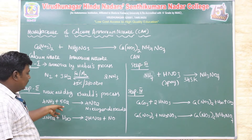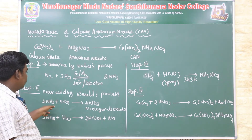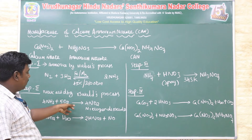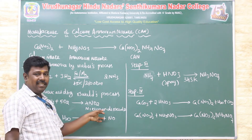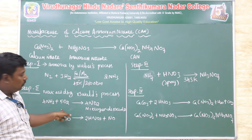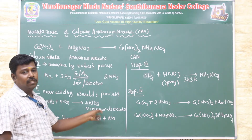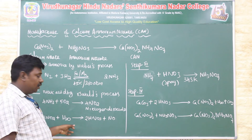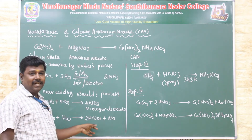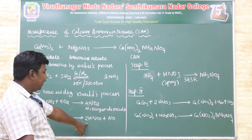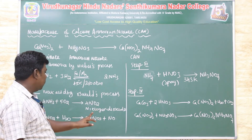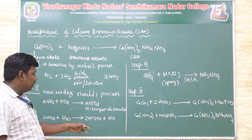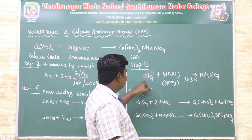Step two: nitric acid is prepared by the Ostwald process. Ammonia is treated with air, producing nitrogen dioxide with oxygen. Further, the nitrogen dioxide is dissolved in water, and water distributes the nitric acid. So nitric acid is prepared by the Ostwald process, involving initial nitrogen dioxide formation, then dissolving in water to yield nitric acid.